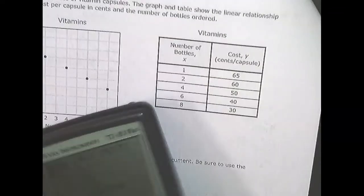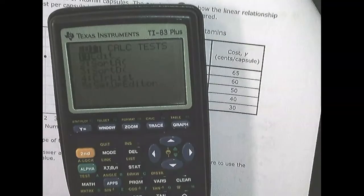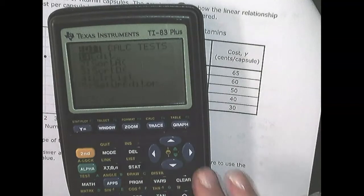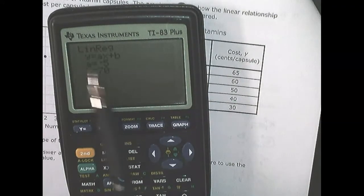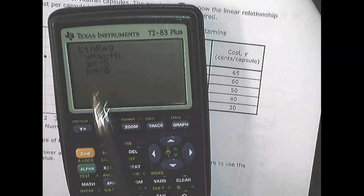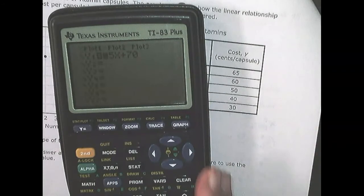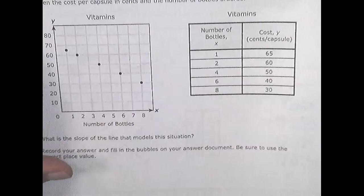Alrighty, this one's going to be fast. I took the table. I put it in stat edit. I'm going to go stat, calculate, lin reg, list 1, comma, list 2, comma, bars, y bars, enter, enter, enter. And I can actually answer from right at the screen. Doesn't M say negative 5 and B is 70? The answer is negative 5. Negative 5.